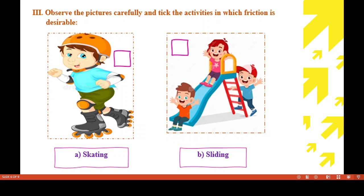Now Roman III: observe the pictures carefully and tick the activities in which friction is desirable. Frictional force is a force which opposes the motion. When we walk on the road we stand properly because of frictional force. The first picture shows skating, and the second shows sliding in a park. Skating is an activity in which friction is desirable, and sliding is another such activity.